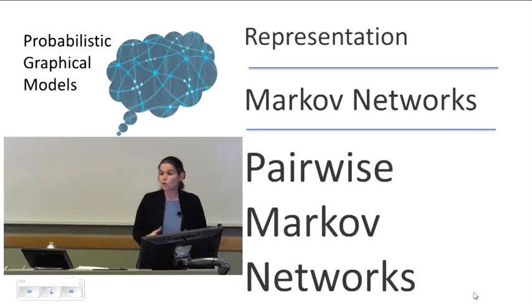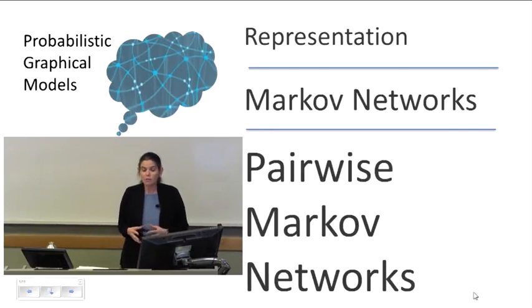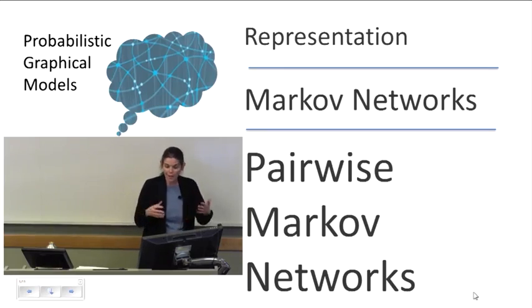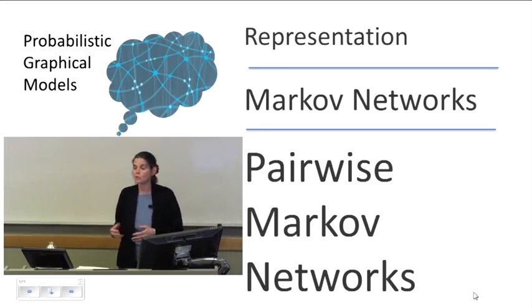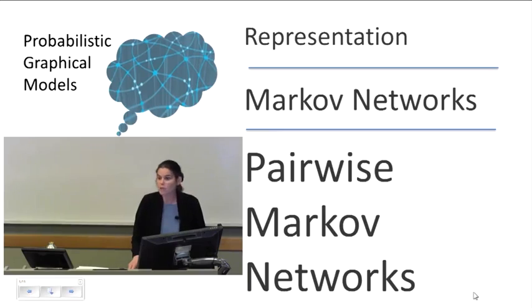So as we said at the very beginning, there are two main families of graphical models. There are those based on directed graphs, directed acyclic graphs, and those based on undirected graphs. The undirected graphical models are typically called Markov networks. They're also called Markov random fields. We're going to start by talking about the simplest subclass of those, which is pairwise Markov networks, and then we're going to generalize it.